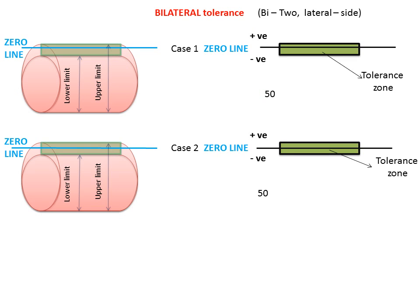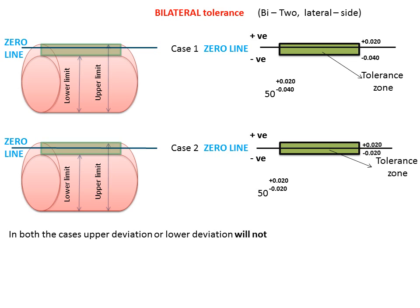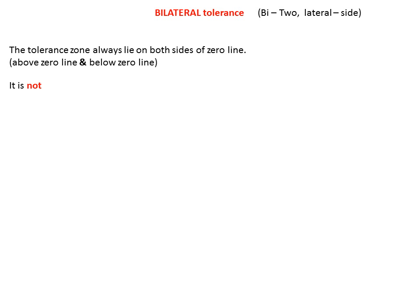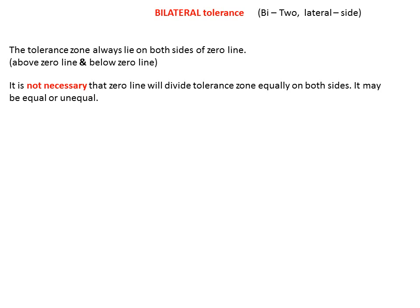Bilateral Tolerance Zone lies on both sides of the zero line. The zero line divides the tolerance zone into two parts. In Case 1, you can see the zero line dividing the tolerance zone into two unequal parts. In Case 2, the zero line divides the tolerance zone into two equal parts. In both cases, the upper deviation or lower deviation will not be zero — it will always be a combination of positive and negative deviation. The Tolerance Zone always lies on both sides of the zero line — above and below. It is not necessary that the zero line divides the tolerance zone equally; it may be equal or unequal.